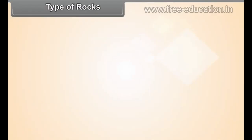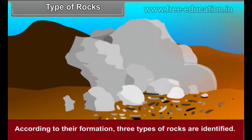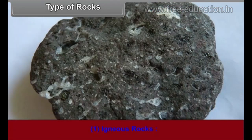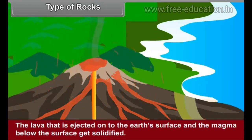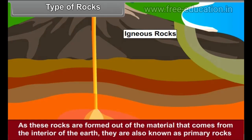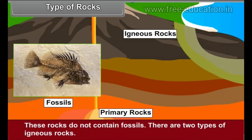Types of Rocks: According to their formation, three types of rocks are identified. Igneous Rocks: The lava that is ejected onto the Earth's surface and the magma below the surface get solidified. Rocks formed through this process are called Igneous Rocks. As these rocks are formed out of the material that comes from the interior of the Earth, they are also known as primary rocks. There are two types of igneous rocks.